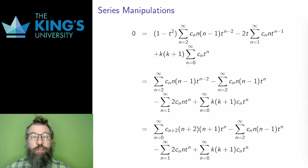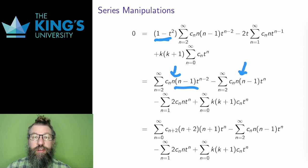First, I split up the 1 minus t squared in front of y double prime into two terms: 1 times the series minus t squared times the series. The t squared I can pull into the sum by adding 2 to the power of t. In the third term, I also pull the t into the sum, adding 1 to the power of t.